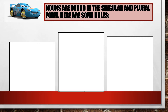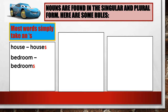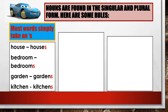Here are some rules. Most words simply take an S. Example: one house, many houses. One bedroom, many bedrooms. One garden, many gardens. One kitchen, many kitchens.